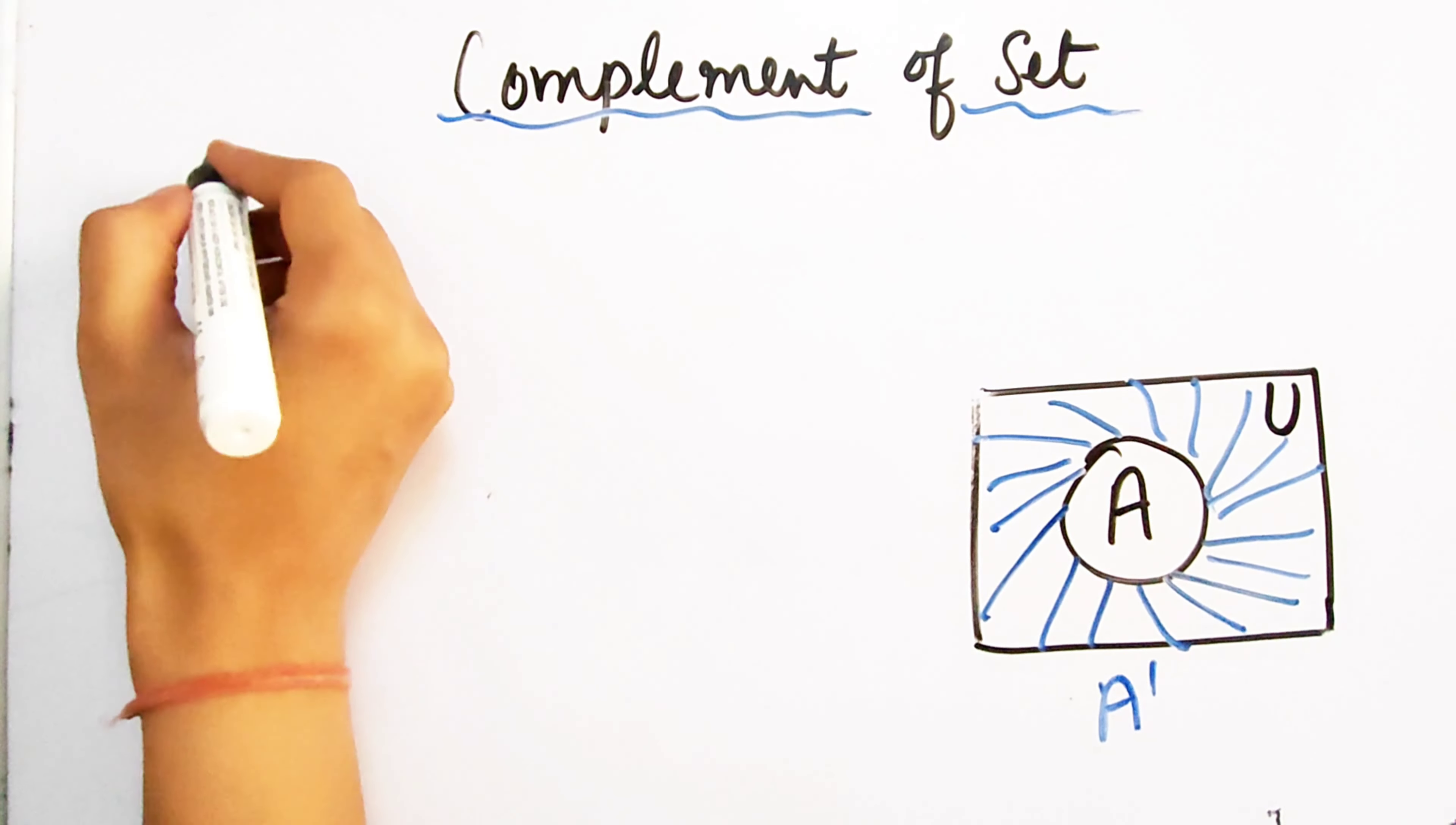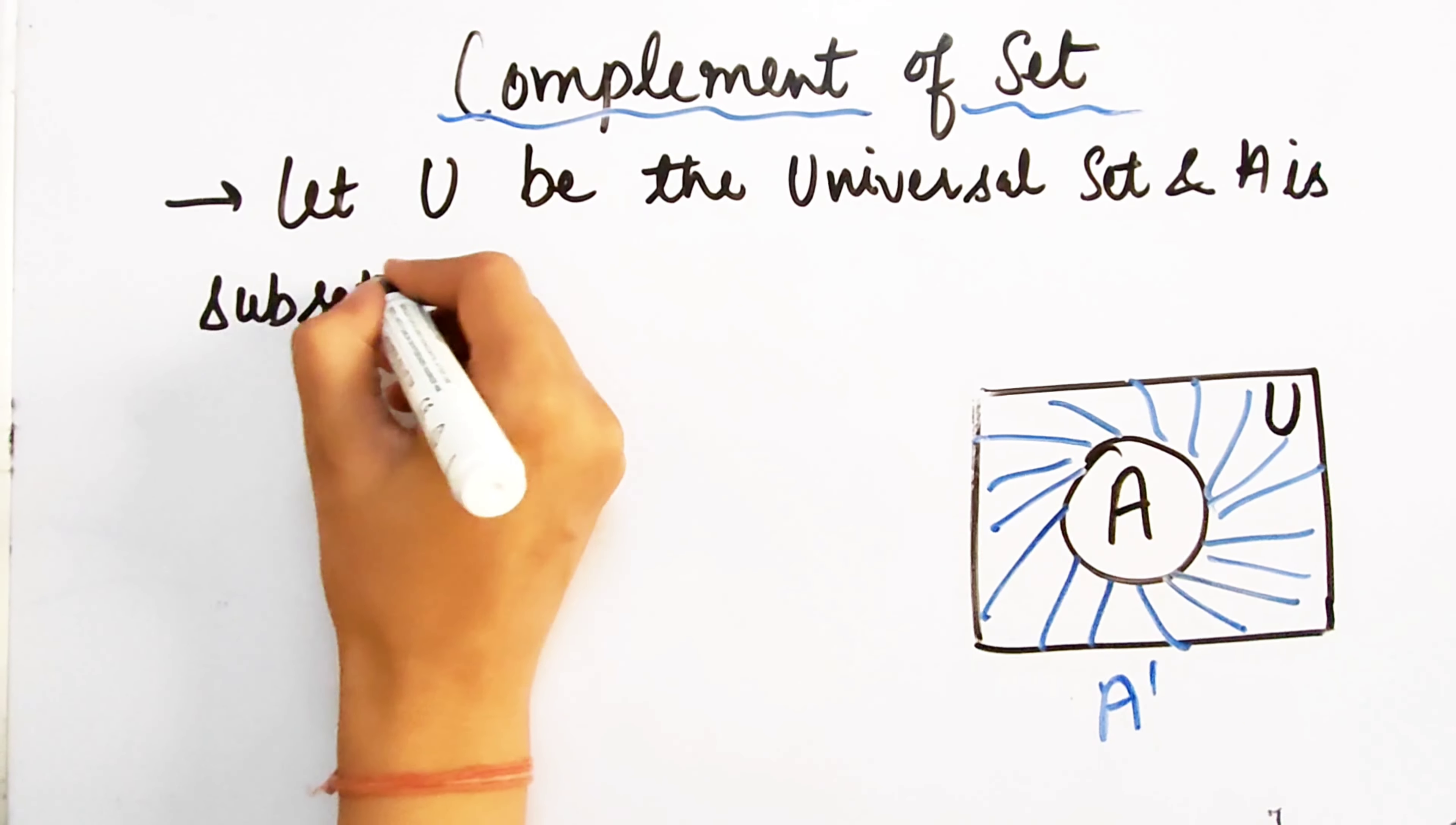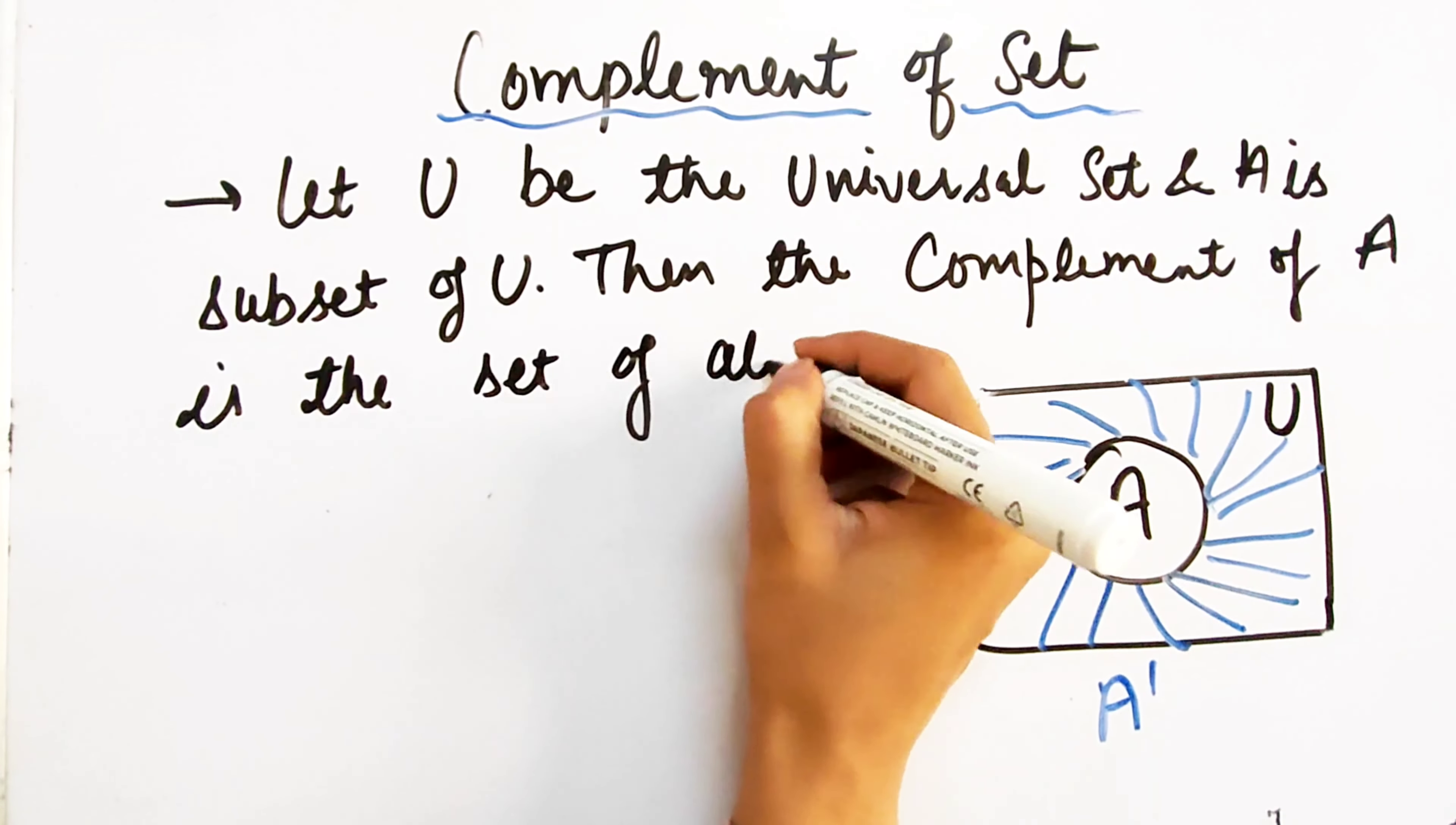You can see Venn Diagrams, Universal Set, and A is the subset of U. Then the complement, what we have done? We have to write it in words. Then the complement of Set A is the set of all the elements of